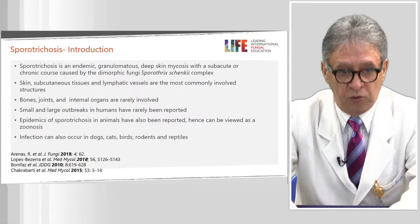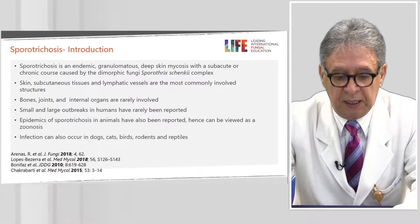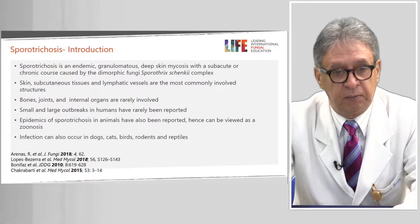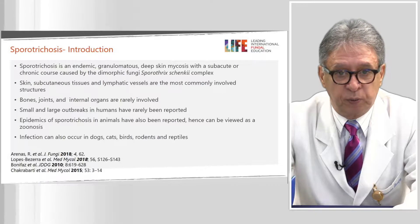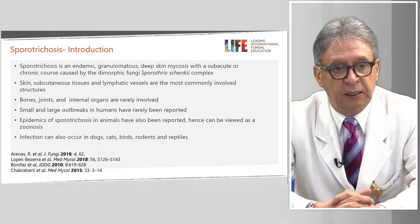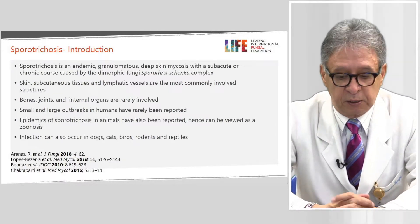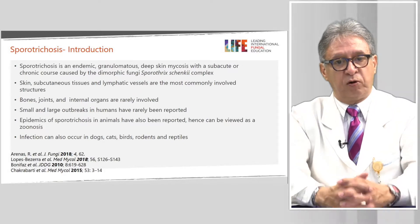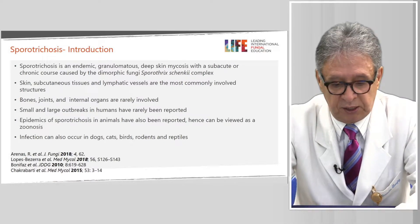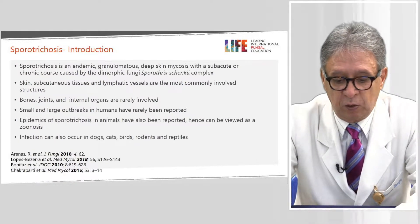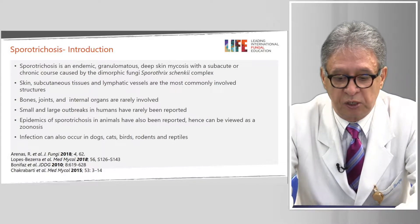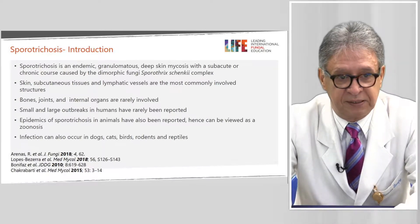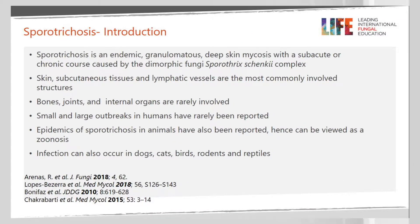As you know, sporotrichosis is a mycosis — it's endemic in some areas. This disease has a widespread endemic mycosis. It could be a subacute or chronic course. It is caused by a dimorphic fungus complex called Sporothrix schenckii. The majority of cases are located in cutaneous and subcutaneous tissues, affecting different lymphatic vessels, and sometimes bones and joints. We also have small outbreaks, including family outbreaks in people who live in certain areas.